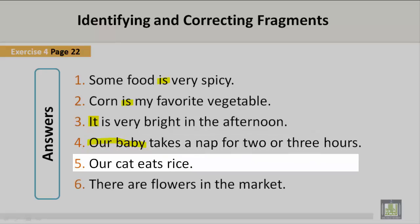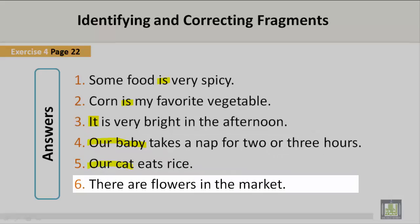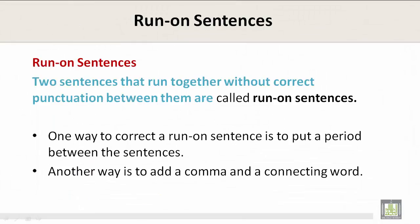Number five: 'Our cat eats rice.' Number six: 'There are flowers in the market.' This is how you make a fragment a complete sentence.